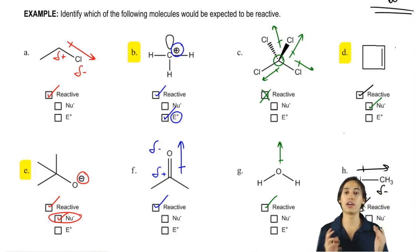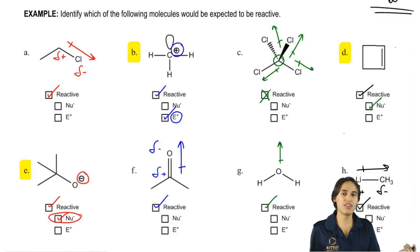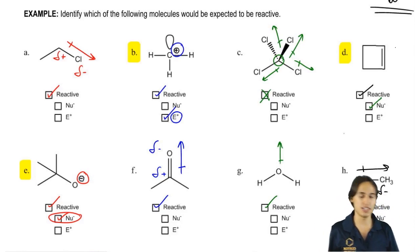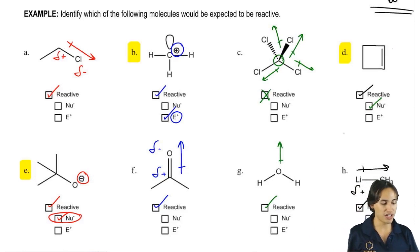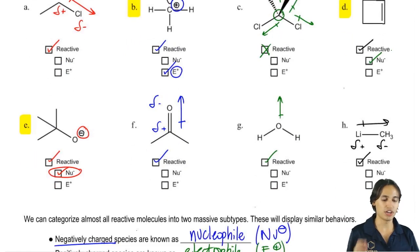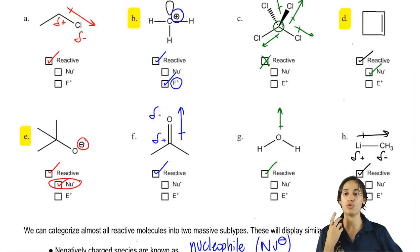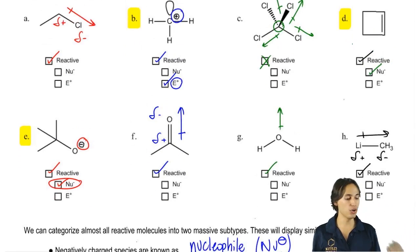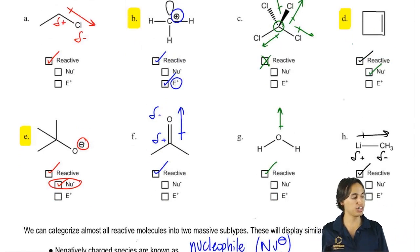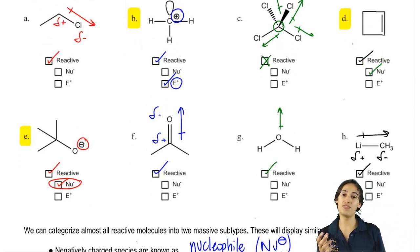So now we just solved three out of eight. Three out of eight of them were really easy. Now for the next ones, they're actually going to be tougher and we're going to need to know a new rule. Because notice, all these other ones have both positive and negative regions.